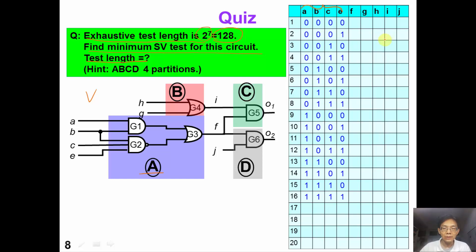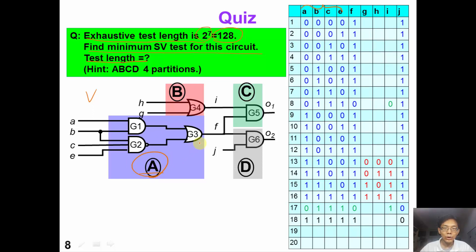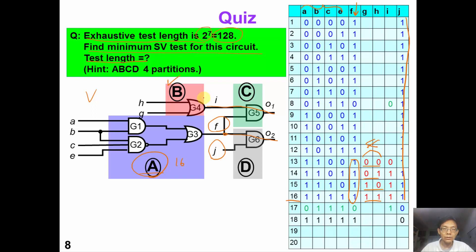Starting with partition A, we have 16 test patterns. To sensitize this output to O2, input J must be one all the time. In this way we can test segment A using exactly 16 test patterns. Now moving on to segment B — to sensitize it to O1, F must be one all the time. Looking at that column, we fortunately have many ones available, so we only need to squeeze in four patterns: 00, 01, 10, 11. We do not need extra patterns to test segment B.